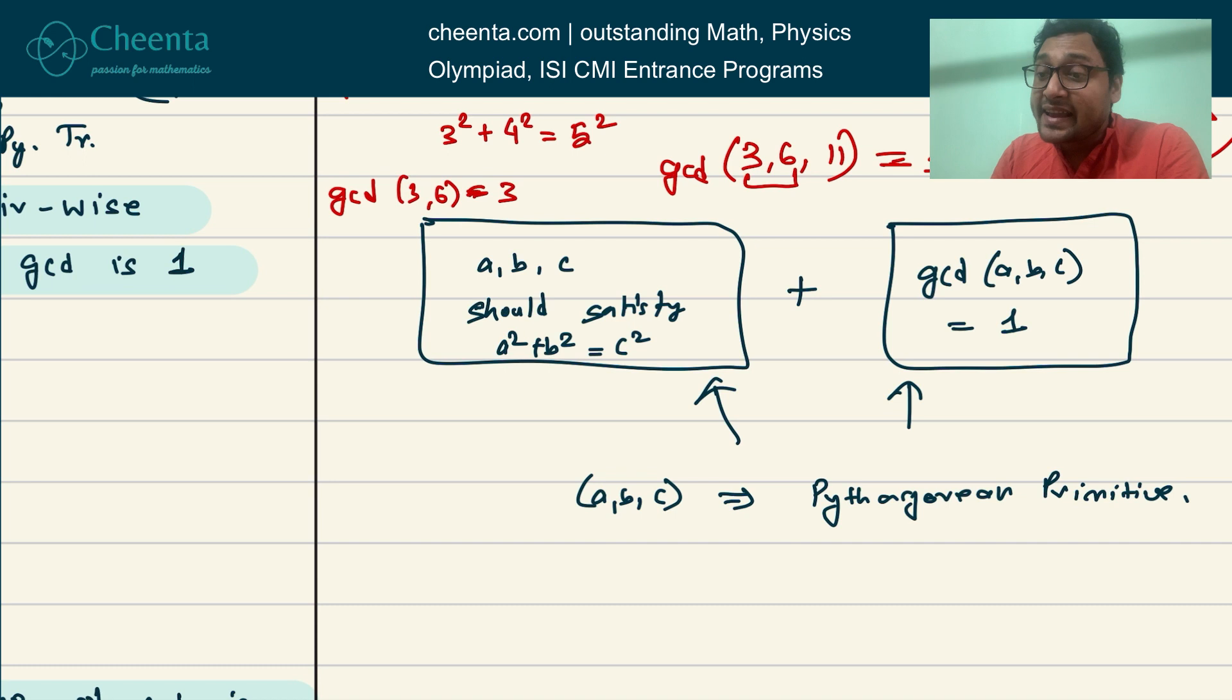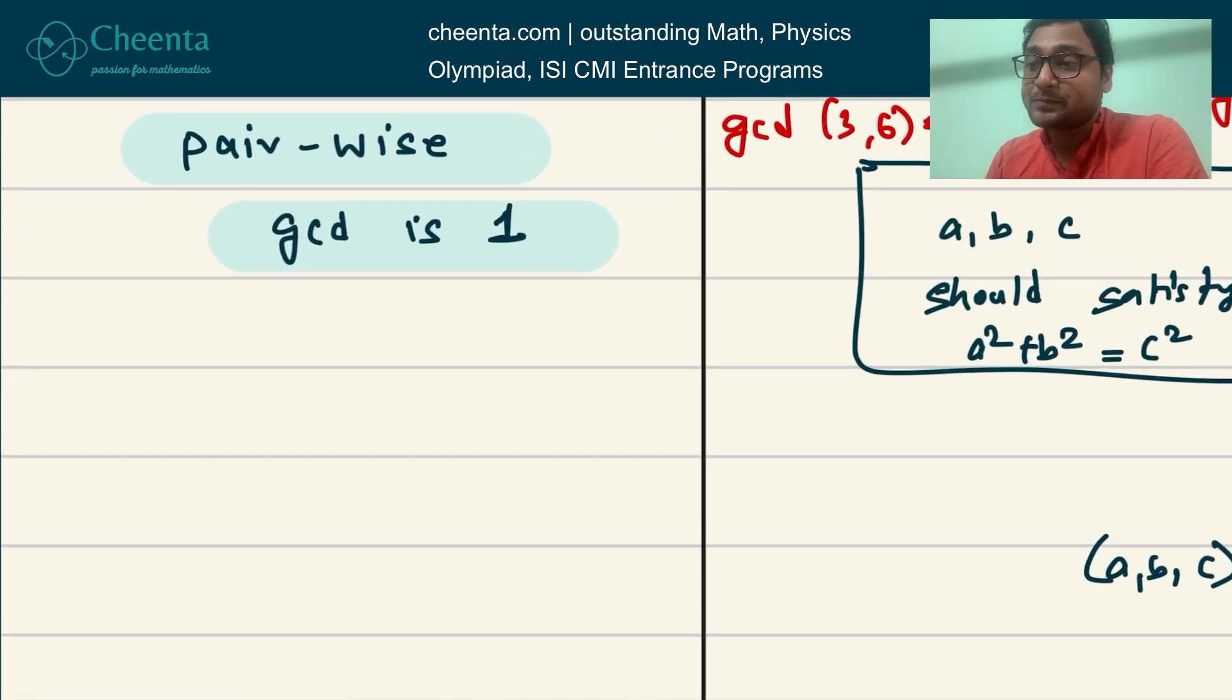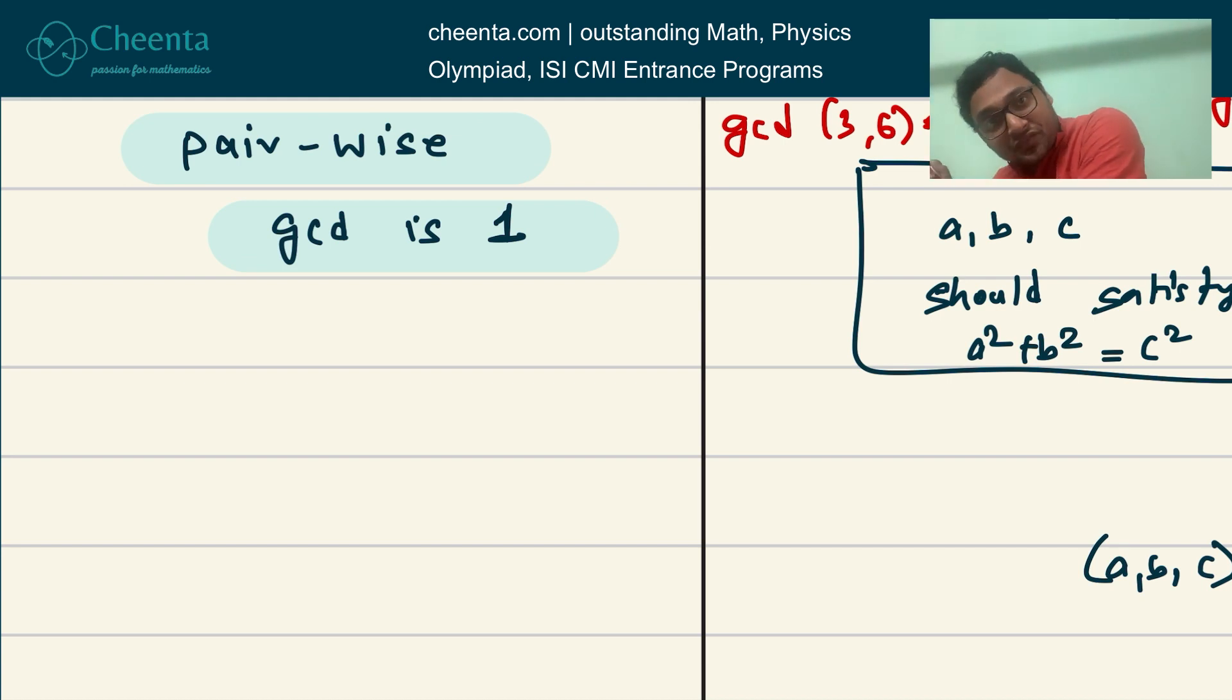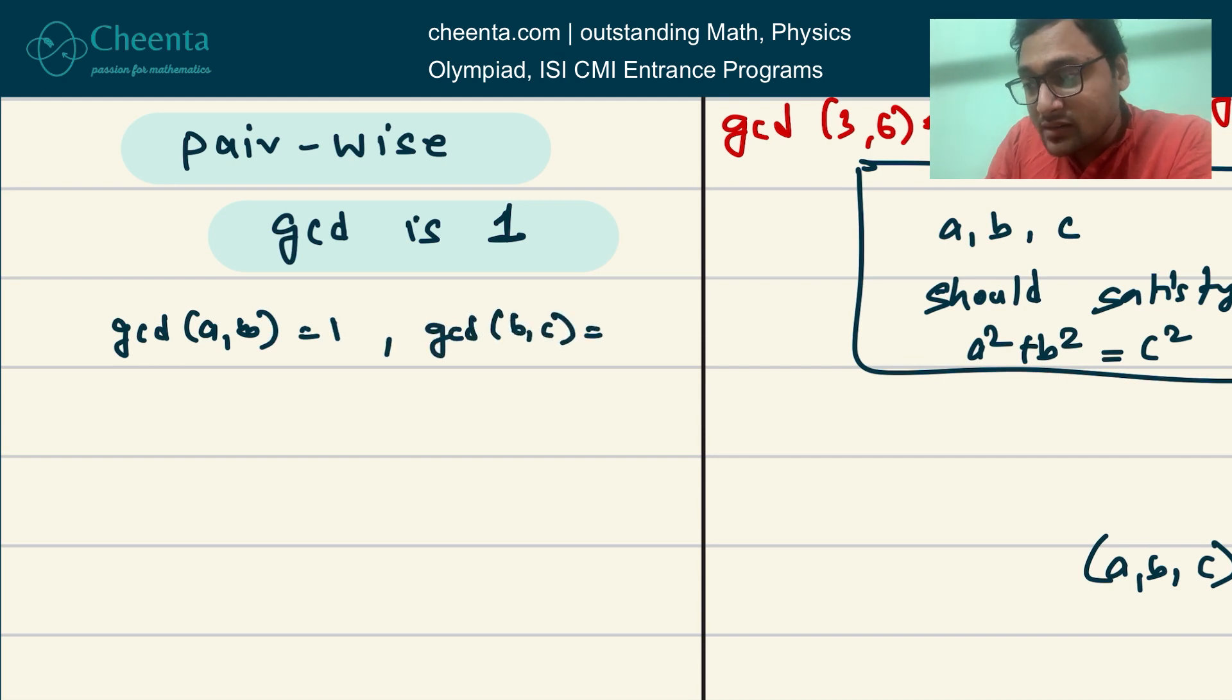But in the case of Pythagorean triples, this actually happens. If ABC is a Pythagorean triple and if the GCD of A, B, C is 1, then their pairwise GCD will also be 1. So GCD of A, B is 1, GCD of B, C is 1, GCD of C, A is 1. Why would that be true?